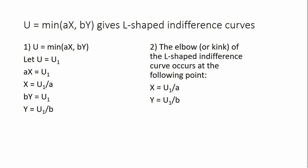In this case, u subscript 1. So we have that down here, divide through by b, and now you have the coordinates that define this point on the L-shaped indifference curve. So the elbow or kink of the L-shaped indifference curve occurs at the following point that we found over here on the left.